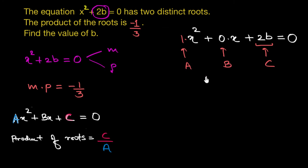So the product of roots would be equal to constant part divided by coefficient of x². That is 2b divided by 1. And this should be equal to -1/3, the product of roots. So let me write that down: equal to -1/3.